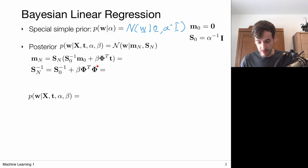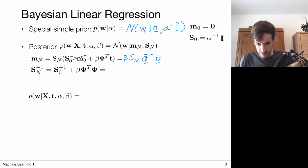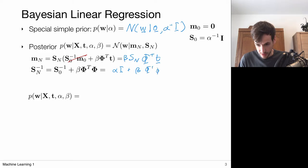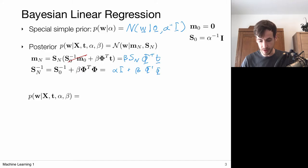Given the likelihood and this prior, I obtain a formula for the posterior distribution — a normal distribution whose mean is given as beta times Sn times the design matrix transpose times T. Since the prior mean was zero, that term drops out. Similarly, the covariance matrix is given by alpha I plus beta times Phi transpose Phi, because the inverse of the prior covariance — a diagonal matrix with alpha inverse — gives alpha here. This gives a nice analytic form for the posterior distribution.